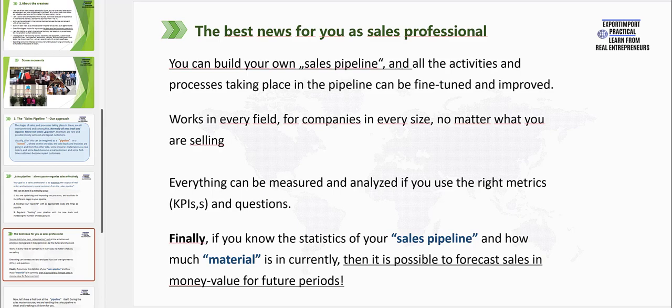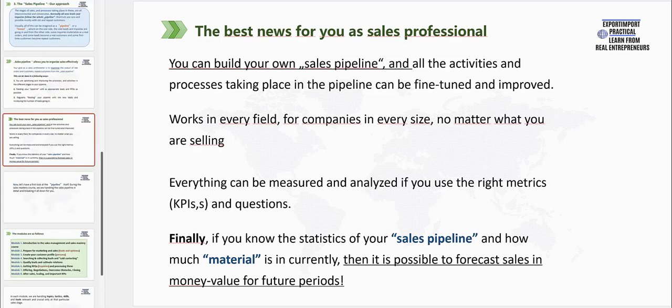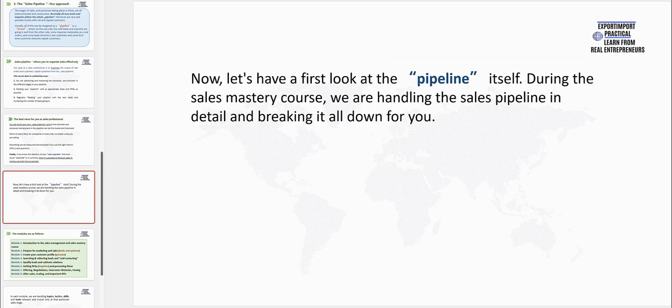You should regularly feed your pipeline with new leads and, if possible, try to increase the number of leads going in every day. The best news for you as a sales professional is that you can actually build your own sales pipeline — your own sales machine, as we call it — and all the activities and processes taking place in that pipeline can be fine-tuned and improved. This concept actually works in every field, for companies big and small, and absolutely no matter what you want to sell. Everything can be measured and analyzed if you use the right metrics and KPIs and ask the right questions. And if you know the statistics of your pipeline and how much material is in it currently, then it is actually possible to forecast the sales in money value for future periods. And in our online sales mastery course, we are exactly showing you how you can build your own sales pipeline.